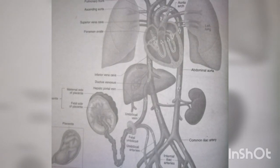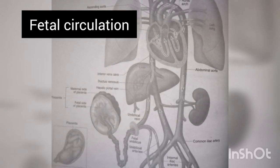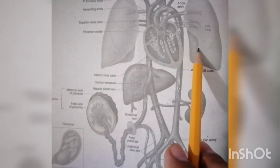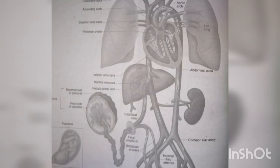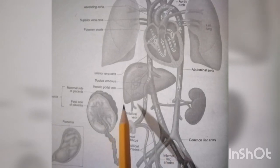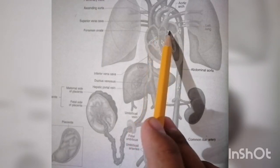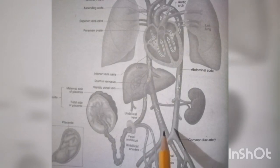Blood then passes through the pulmonary veins to the left atrium, to the left ventricle, and is pumped throughout the body. Now in fetal circulation, the lungs are not working because they are full of fluid. Remember the three shunts in fetal circulation: the ductus venosus, the foramen ovale, and the ductus arteriosus.